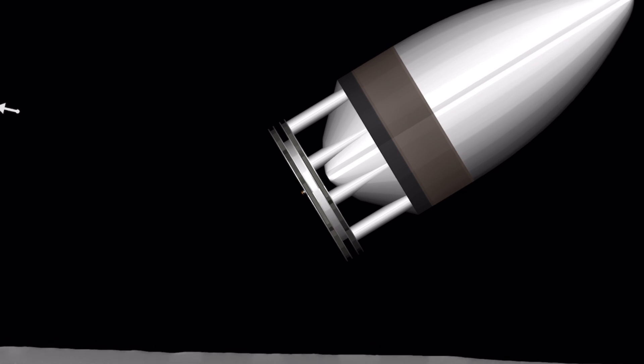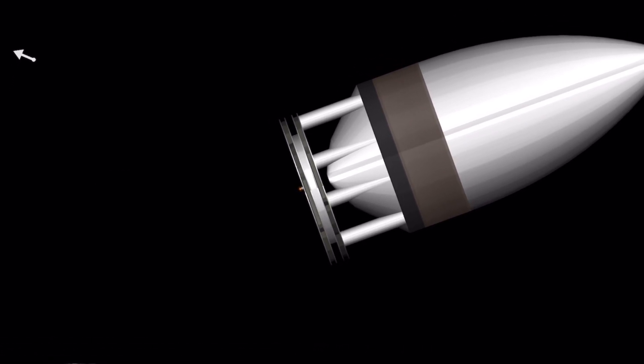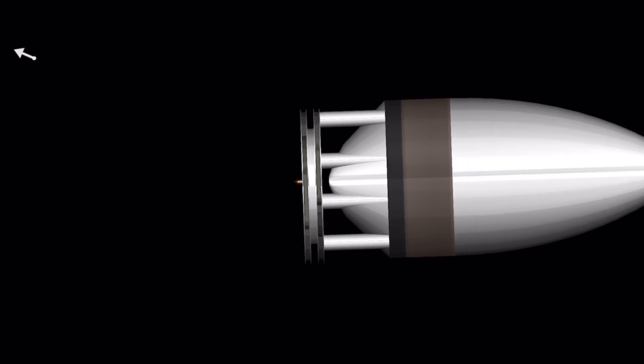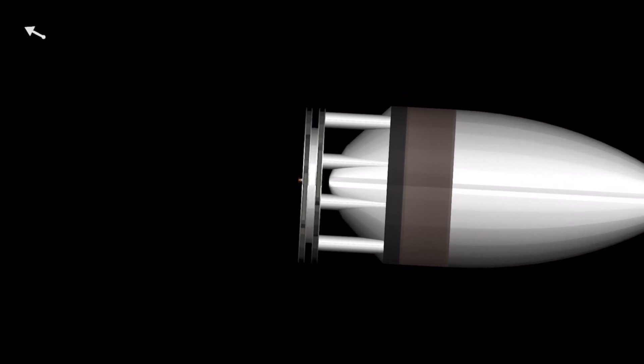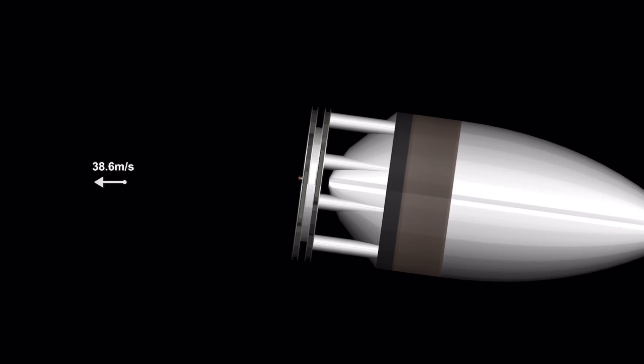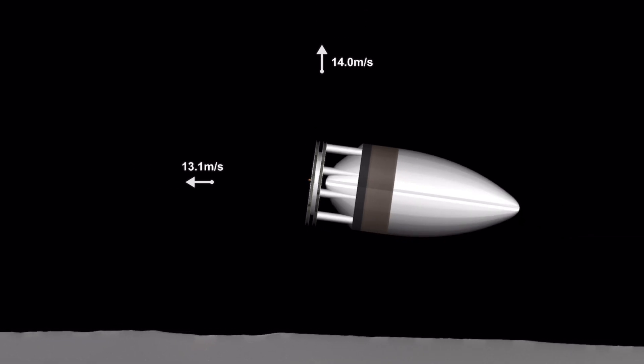The solution for this mistake is that you could start the engine earlier at the correct orientation where you're going, so you can slow down without turning your rocket like the way I'm doing.